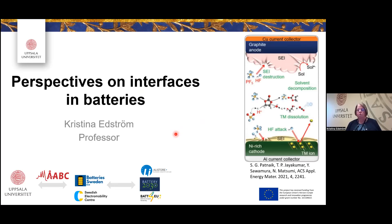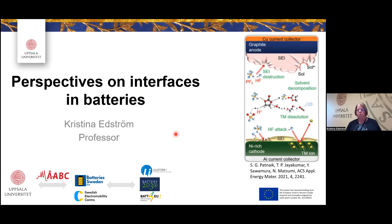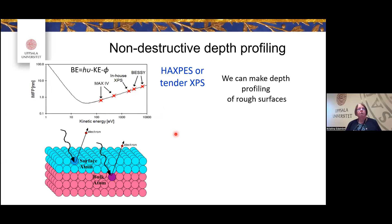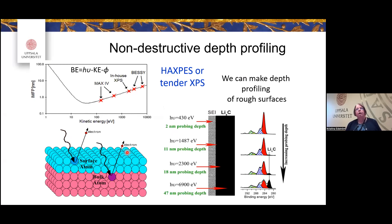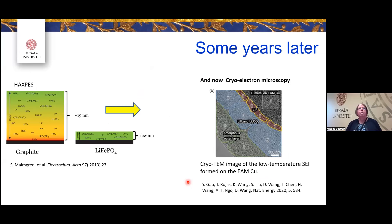Using HAXPES at the MAX IV synchrotron in Sweden, we could go really deeper and deeper into the SEI. For lithium-inserted carbon, we could see different carbonaceous species at different depths — and the deeper you go, the more graphite and lithiated graphite you find.